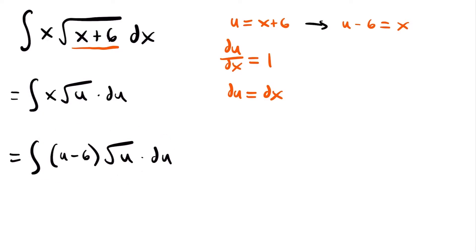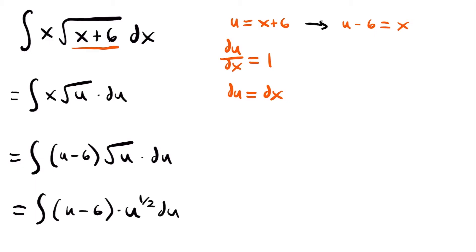Now our integral is entirely in terms of u, so we should be able to integrate it. But before we integrate, we need to simplify the integrand. The first thing we want to do is rewrite the square root of u as u to the one-half power — the square root of a value is the same as taking it to the one-half power. So we have the integral of u minus 6 times u to the one-half power times du. Now we can distribute u to the one-half through this quantity, giving us a nice integral with two terms we can integrate using the power rule.